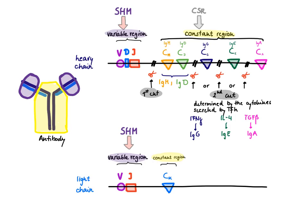The second cut is dependent on the cytokines that are around in the germinal center, produced by the T-follicular helper cell. The second cut can occur either right before the gamma chain, right before the epsilon chain, or right before the alpha chain.